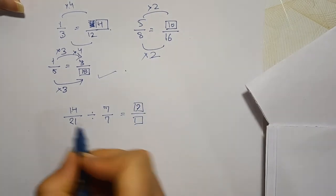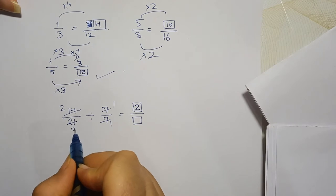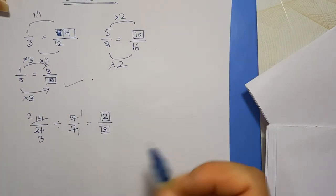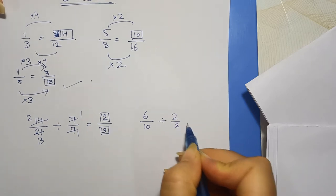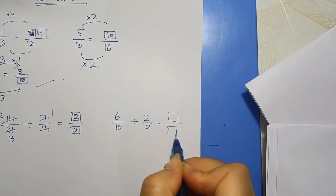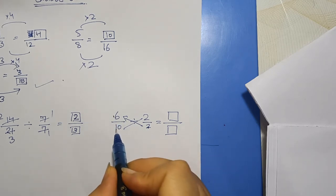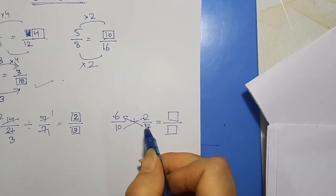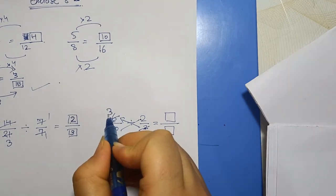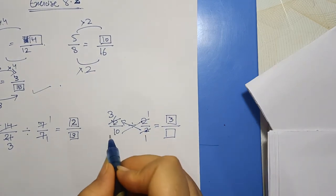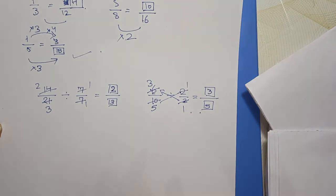14 upon 21, divided by 7 upon 7, equals blank — aapko fill karna hai. 14 ko 7 se divide karo: 7 twos are 14, toh aap yahan 2 likhoge. 7 threes are 21, toh yahan 3 aajayega. Isi tarah 6 upon 10 divided by 2 upon 2 equals blank upon blank. Cross multiplication: 6 ko 2 se divide karo — 2 threes are 6, toh 3 aajayega. 2 fives are 10, toh 5 denominator mein aajayega.